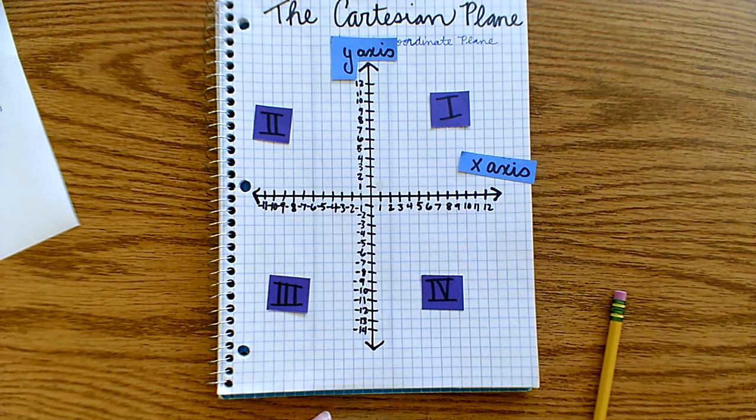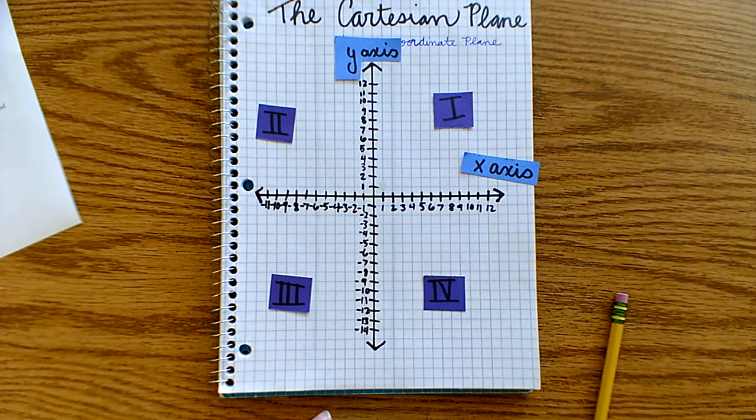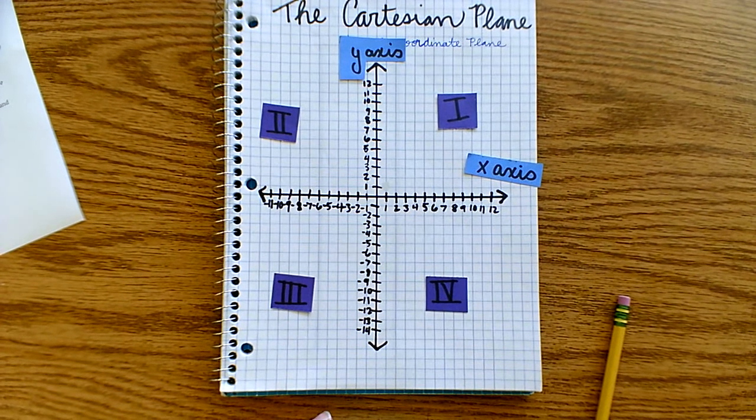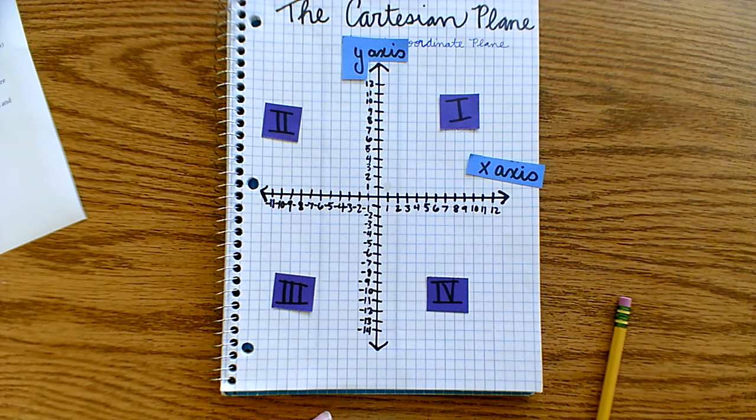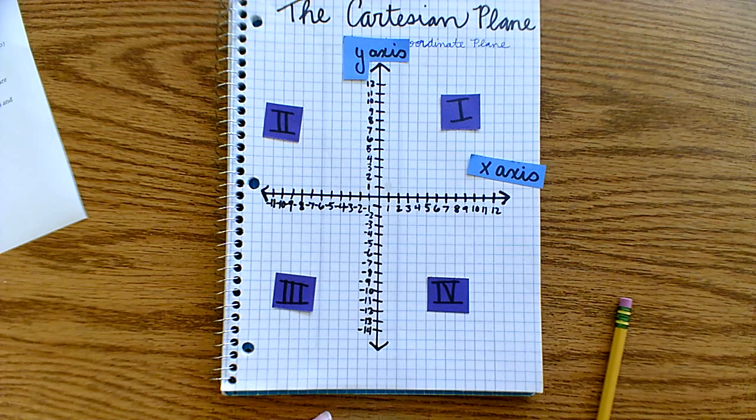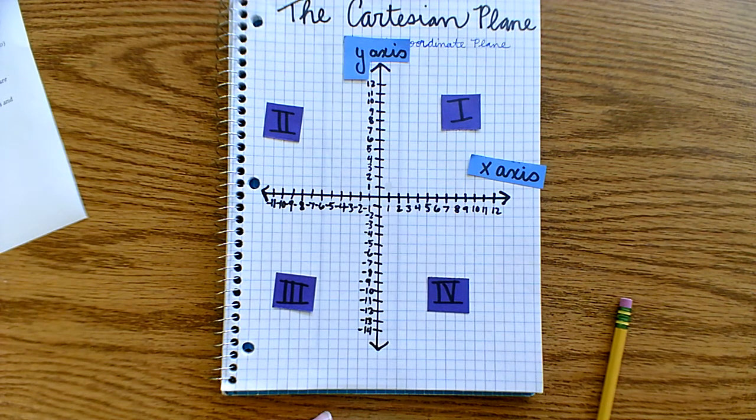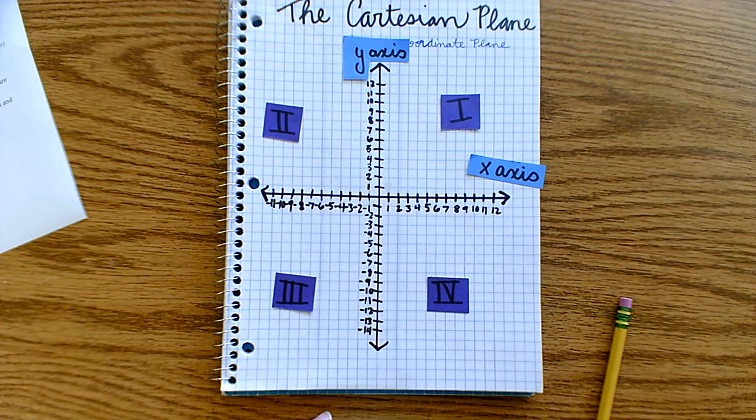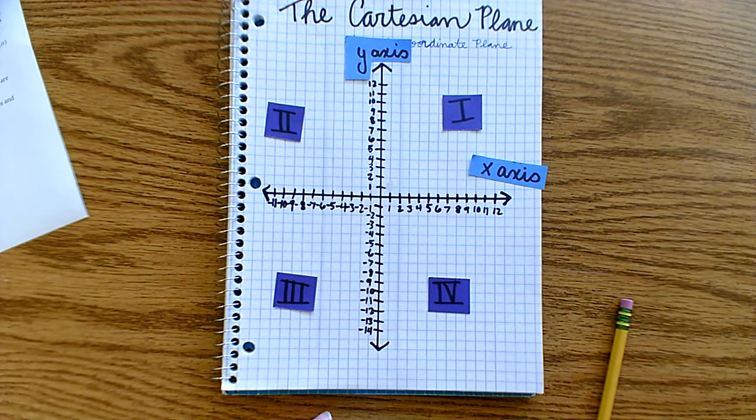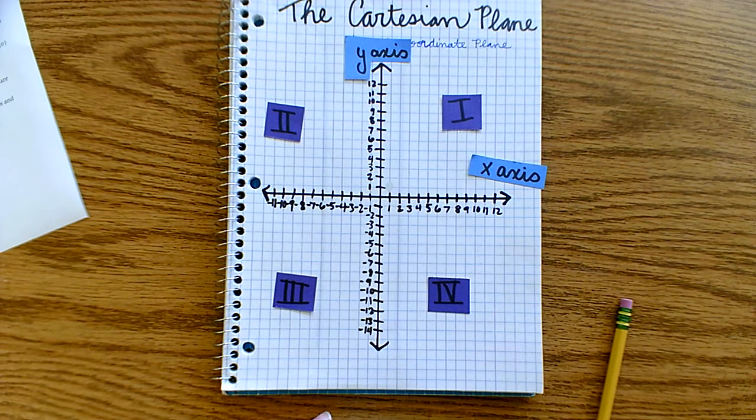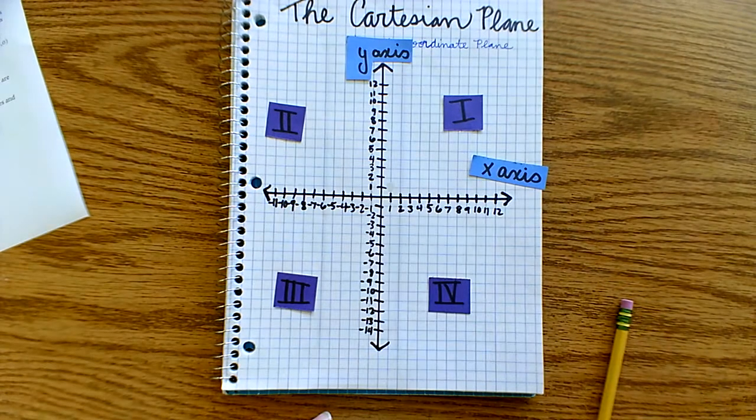Think about the word quad: quadrilateral, quarter. How many other words can you think of that start with that quad prefix? Well, we remember that whatever you're referring to refers to quad meaning four. Anyways, in this system that Descartes created, he created something called coordinate pairs or an ordered pair, which describes the location of any point on the coordinate plane.